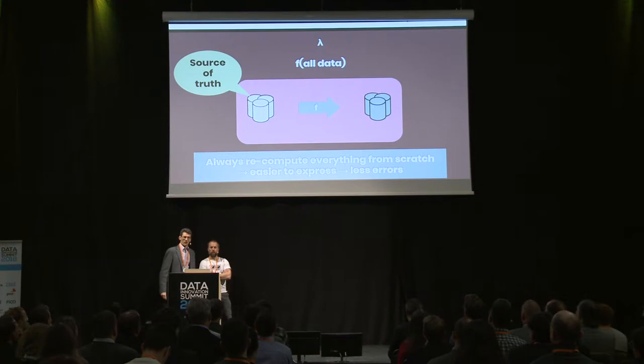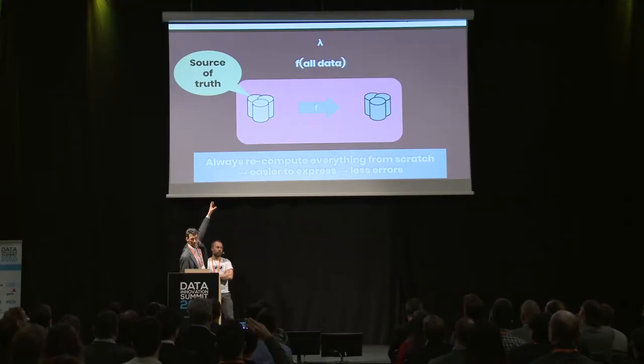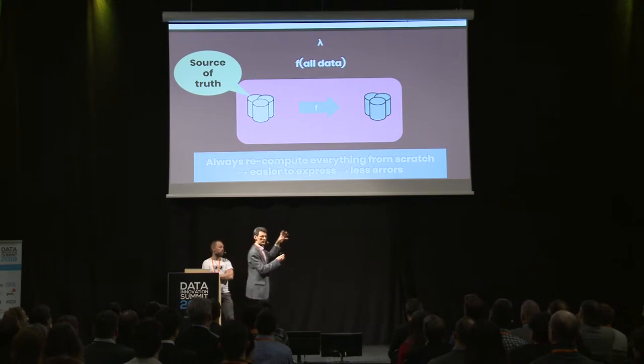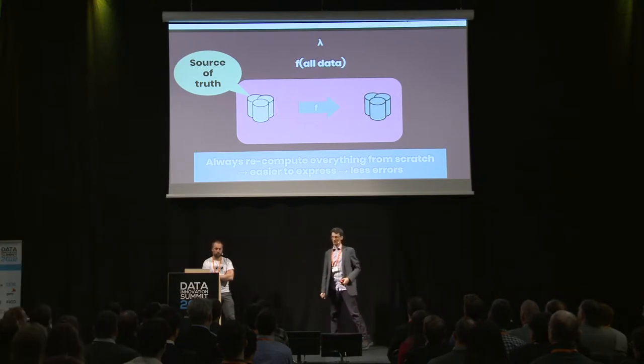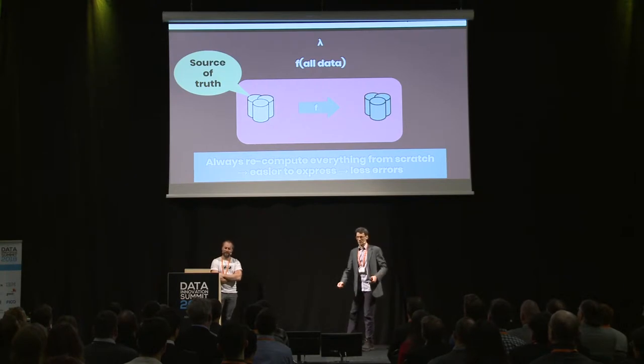We still adhere to the lambda architecture — a conservative approach, but the nice thing is all data lands as-is on the left-hand side of the distributed file system, and each transformation is a function of all data, so everything is recomputed from scratch every time. We do this to avoid being stupid — it's easier to express a transformation that recomputes everything from scratch than one that tries to be incremental. If you give an analyst something easier to express, they're likely to make fewer errors. This has served us well for five years.